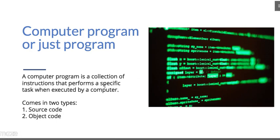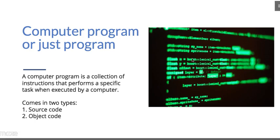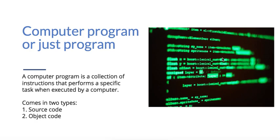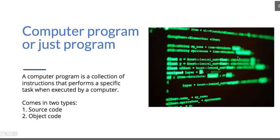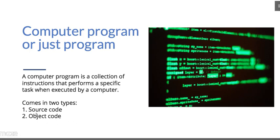If you use a source code, then you can use a source code. This is a source code in the computer. You can use a computer program and some resources, and you can use a machine. The source code is directly on the computer. The step goes on to 1 and 0. This is the source code for the computer.